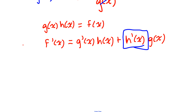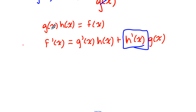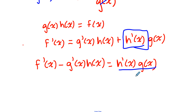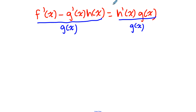I will subtract this term to the other side. So I have f'(x) minus g'(x)·h(x) equals h'(x)·g(x). Now I have to get rid of this g(x) on the right, so I'll divide both sides by g(x). On the right they cancel, and now I have h'(x) isolated. h'(x) is equal to all of this on the left.